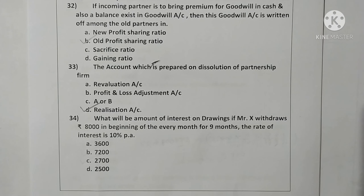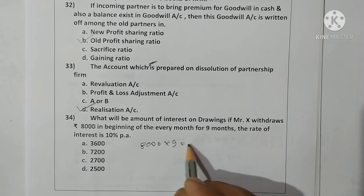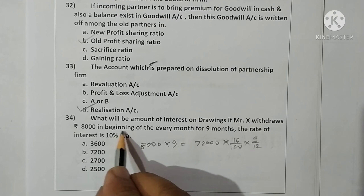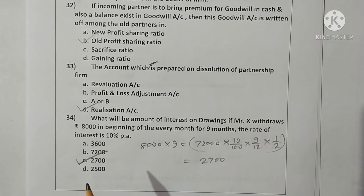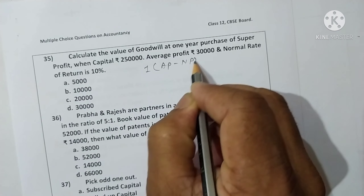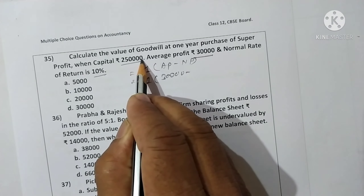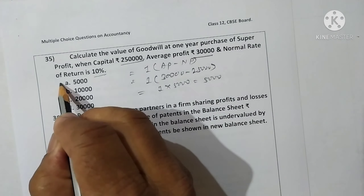Question thirty-four: Mr. X draws Rs. 8,000 at the beginning of every month for nine months; rate of interest is 10%. Total drawings: 8,000 × 9 = Rs. 72,000. Interest = 72,000 × 10/100 × 9/12 × 1/2 (beginning of month adjustment) = Rs. 2,700. Option C is correct. Question thirty-five: calculate goodwill at one year's purchase of super profit. Super profit = average profit minus normal profit = Rs. 30,000 minus 10% on Rs. 2,50,000 (= Rs. 25,000) = Rs. 5,000. Goodwill = 1 × Rs. 5,000 = Rs. 5,000. Option A is correct.